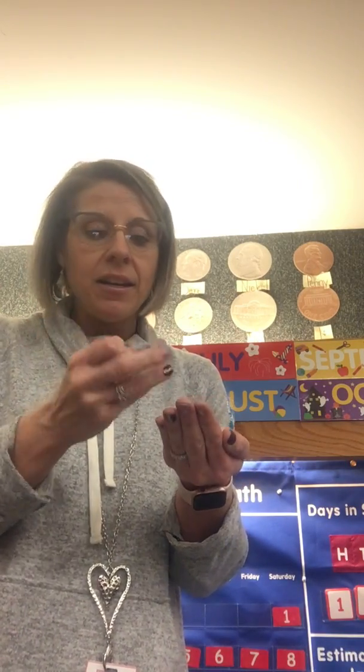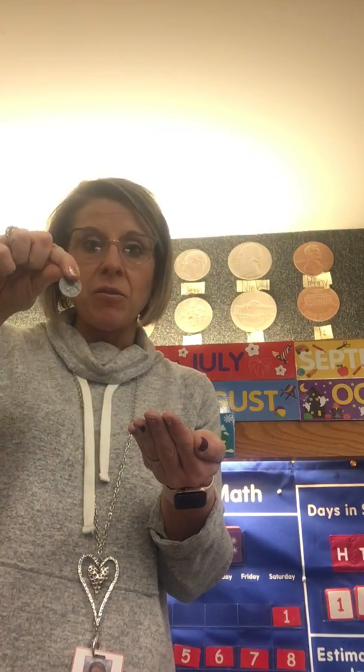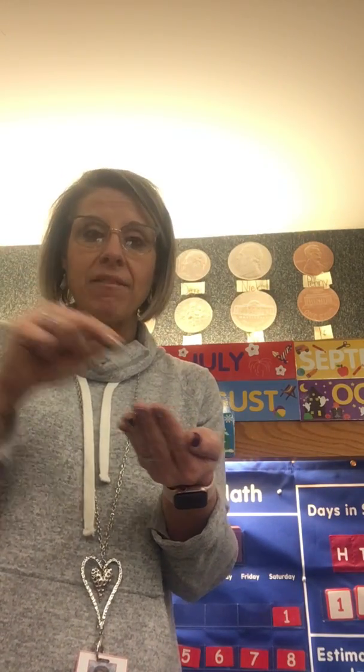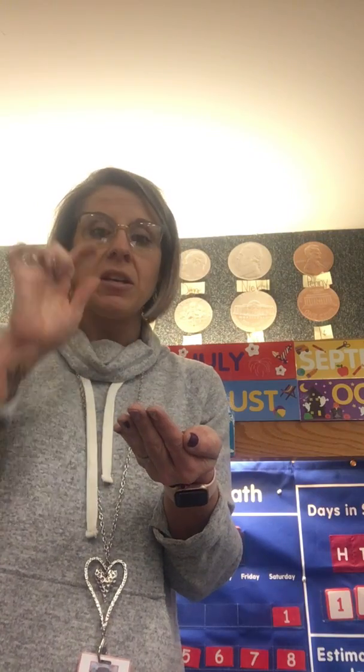So you start with ten, and then we know next will be the nickel. The nickel's worth five, so we have to count on five more from ten: ten, eleven, twelve, thirteen, fourteen, fifteen. So your dime and your nickel make fifteen. Then we go on to our pennies, which are worth one, so we count on one each time: fifteen, sixteen, seventeen, eighteen, nineteen. So we would say we have nineteen cents.